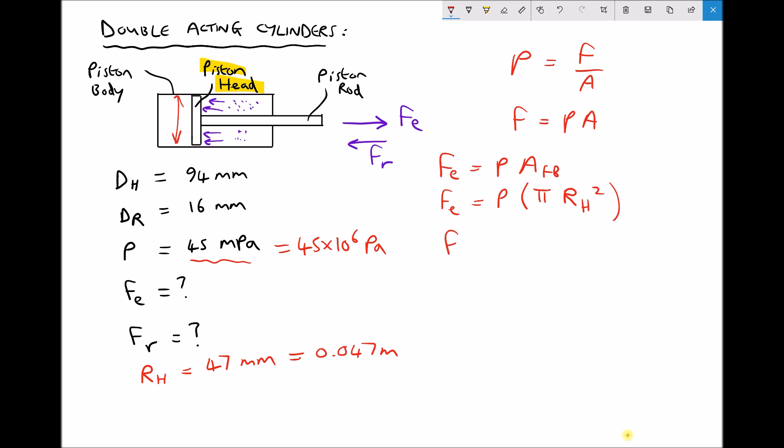So our calculation now becomes Fe equals the pressure 45 × 10⁶ multiplied by π times 0.047 squared. Running that through our calculator we get an answer of 312,290. Let's express that in kilonewtons: 312.3 kilonewtons.